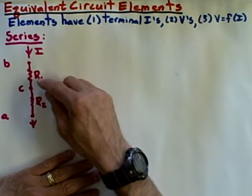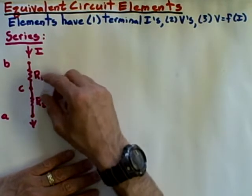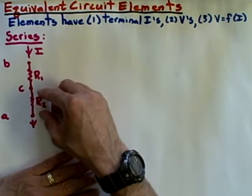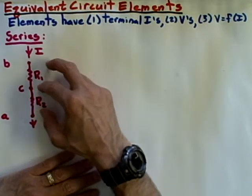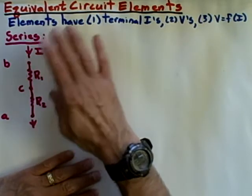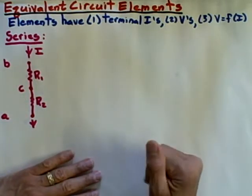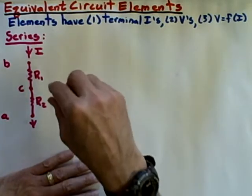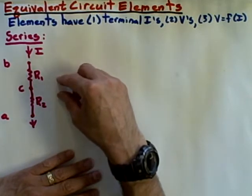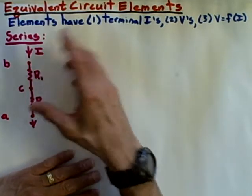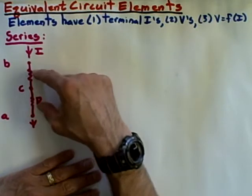The idea would be, can I find some way to take this combination of resistors, and in particular the effect that it has on the rest of the circuit, and remove that combination from the circuit and replace it with something simpler, which has precisely the same effects on the external circuit as this original combination did.